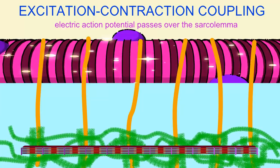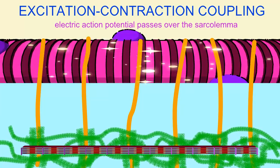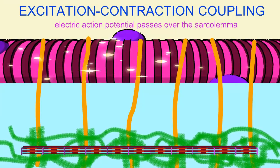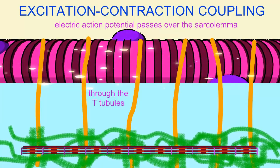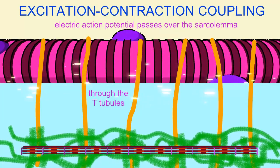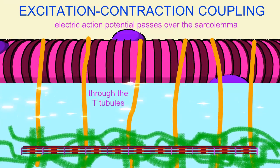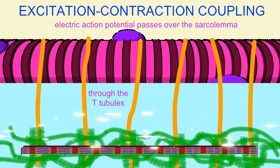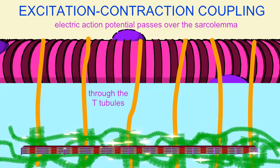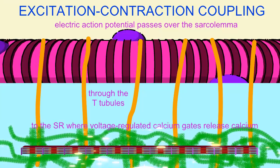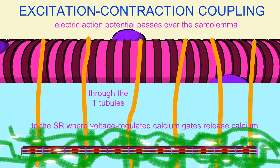The excitable cell membrane of the muscle cell is known as the sarcolemma, and the electric action potential can pass through T tubules, which are membrane-bound channels passing from the sarcolemma deep into the muscle cell. This brings the electric action potential to the muscle cell's interior.